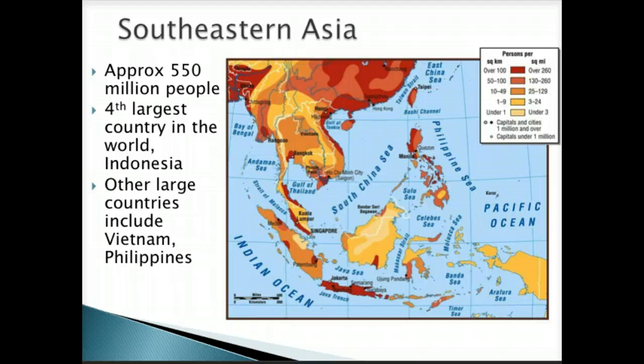Southeast Asia is also growing. We have the fourth largest country in the world in Indonesia. Throughout the island areas of Southeast Asia, you see some very dense and fast-growing populations. Countries like Vietnam, the Philippines, and Indonesia are places where population per square mile is very high, and those concentrations are significant.